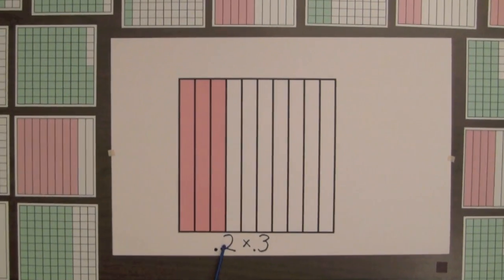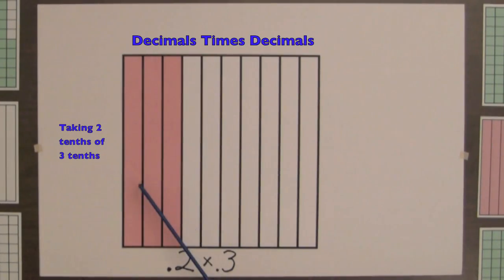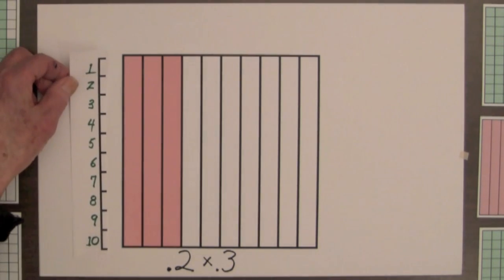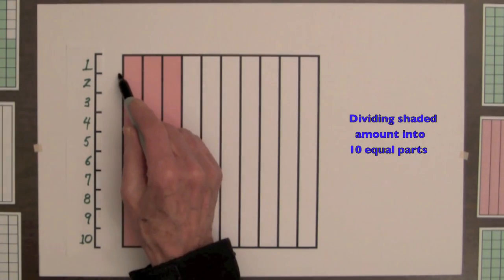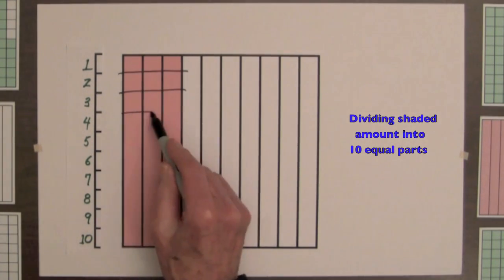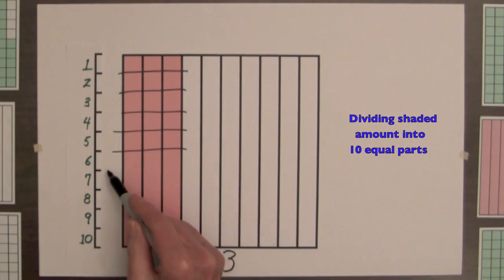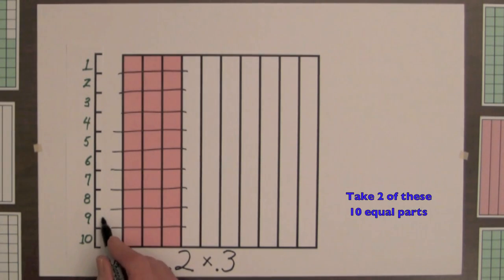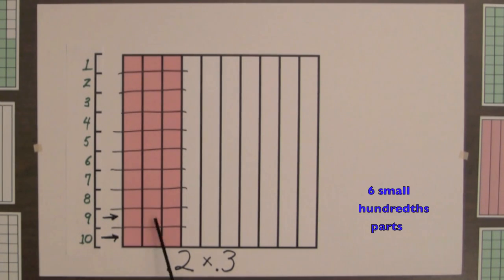To illustrate the product 2 tenths times 3 tenths, we will take 2 tenths of the shaded amount of this 3 tenths square. To take 2 tenths of something, we divide it into 10 equal parts and take 2 of those parts. So we will use these 10 equal parts to divide the shaded amount of this square into 10 equal parts. Here are 2 of these 10 parts, and they contain 6 small hundredths squares. So 2 tenths times 3 tenths equals 6 hundredths.